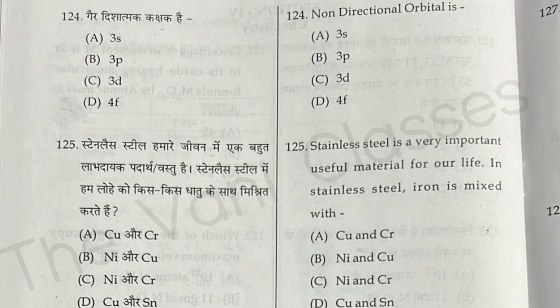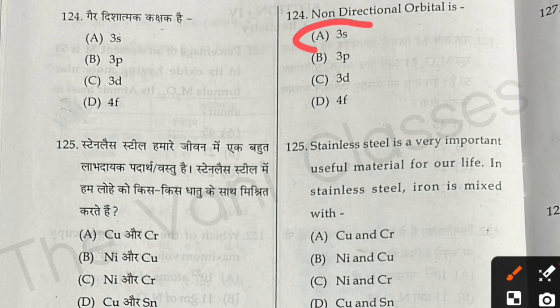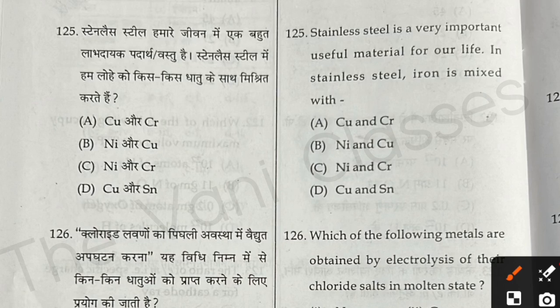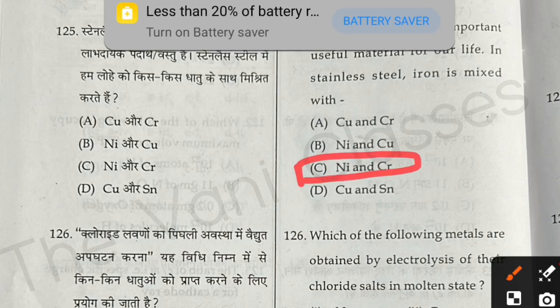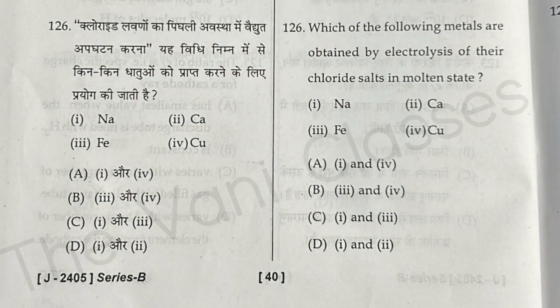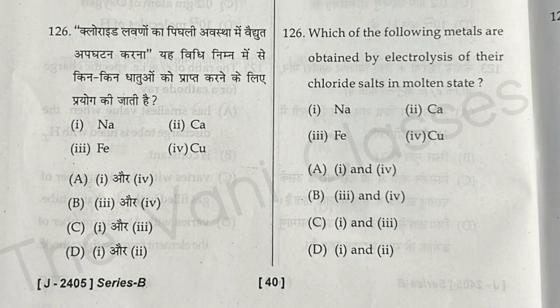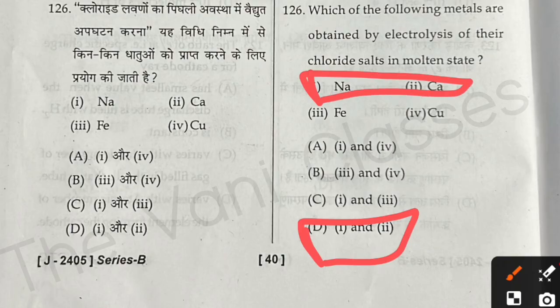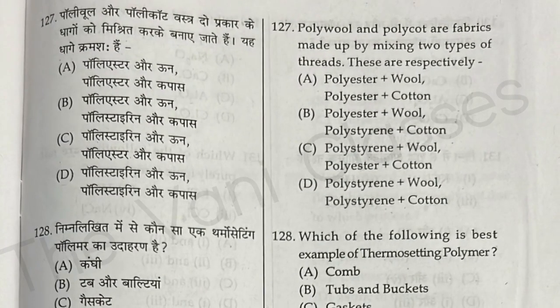Question 124: Non-directional orbital — the right answer is option A. Question 125: Stainless steel is a very useful material; in stainless steel, iron is mixed with nickel and chromium — option C. Question 126: Which of the following metals are obtained by electrolysis of their chloride salts in molten state? The right answer is option D — sodium and calcium.